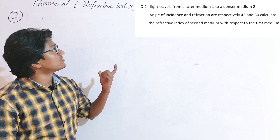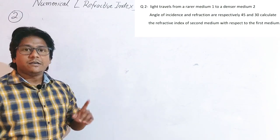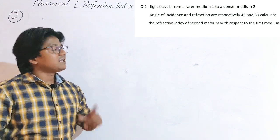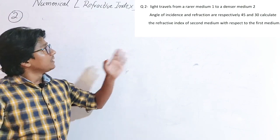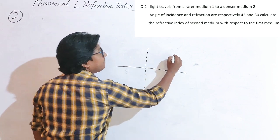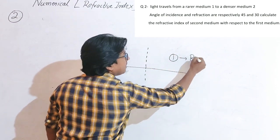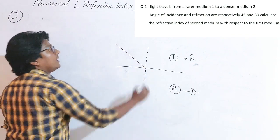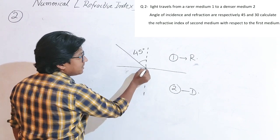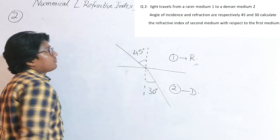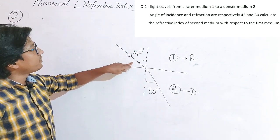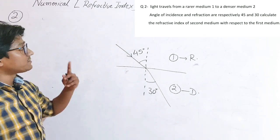Moving to the second question on screen: a light ray travels from a rarer medium 1 to a denser medium 2. The angle of incidence and refraction are 45 degrees and 30 degrees respectively. Calculate the refractive index of second medium with respect to first medium. As shown in the diagram, this is the normal, medium 1 is rarer and medium 2 is denser. The light ray bends toward the normal as it enters the denser medium, so the incidence angle is 45° and refracted angle is 30°.